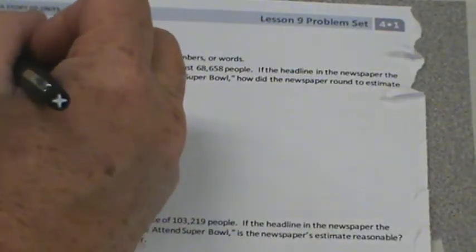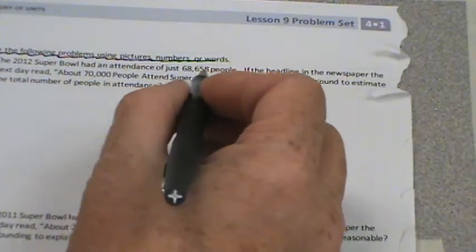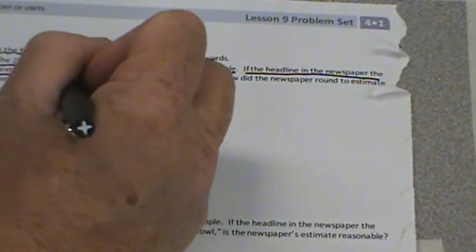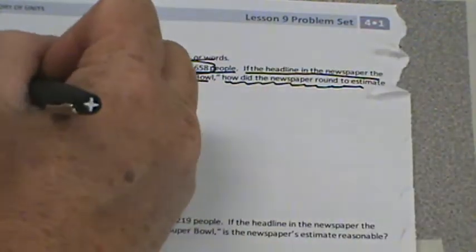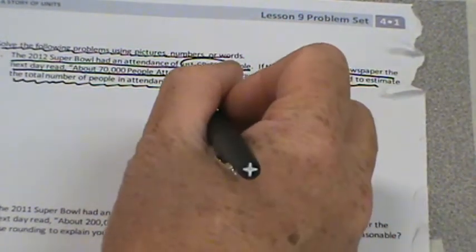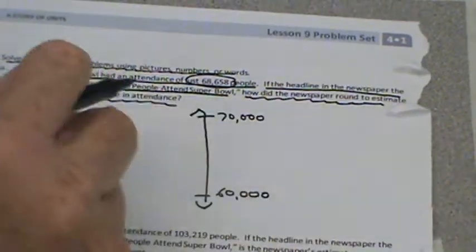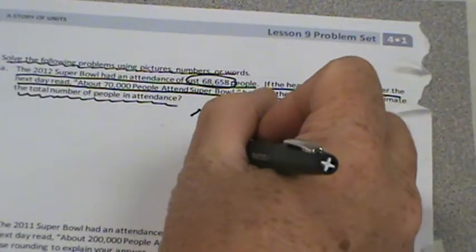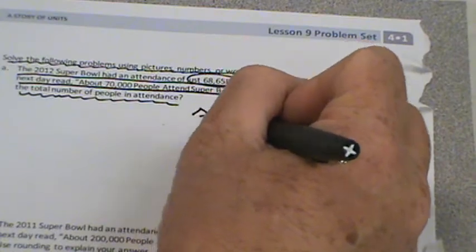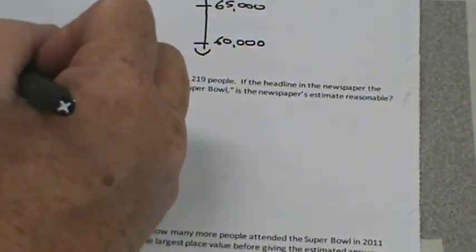Let's flip the paper over and try to get one of these done. It says solve the following problems using pictures, numbers, or words. The 2012 Super Bowl had an attendance of 68,658 people. If the headline in the newspaper the next day read about 70,000 people attended Super Bowl, how did the newspaper round to estimate the total number of people in attendance? Let's make a number line. There's 70,000 and there's 60,000 because our number we're rounding is 68,658. What's our midway point? 65,000. So the number that attended is 68,658, so we would definitely round up.